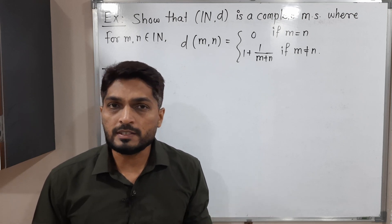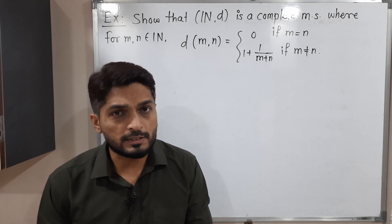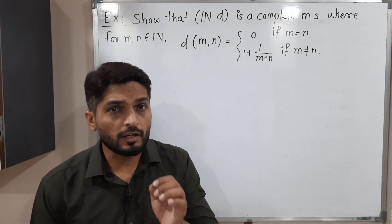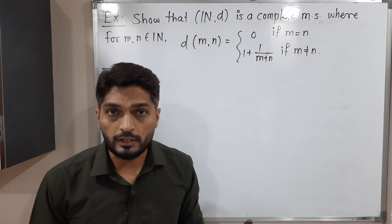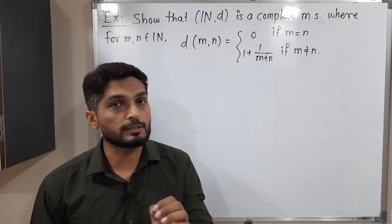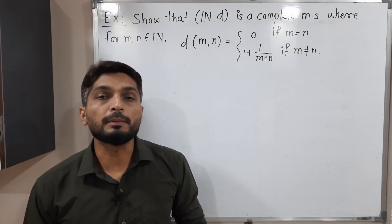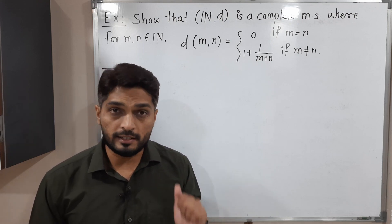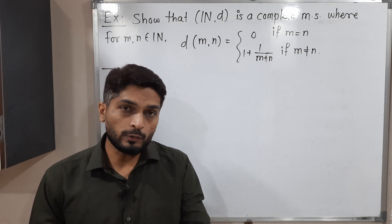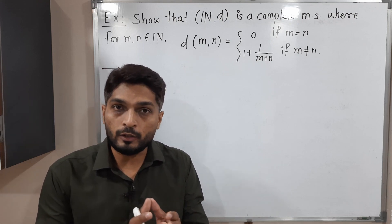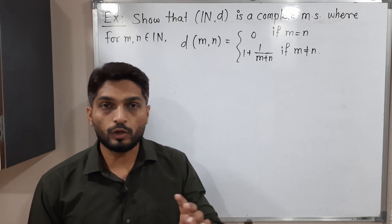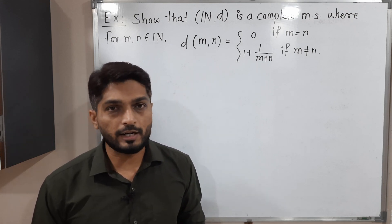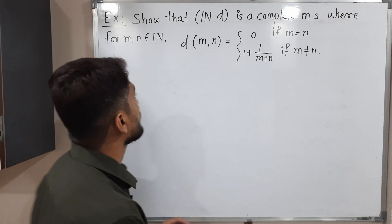When do we say a metric space is complete? If every Cauchy sequence is convergent, then we say the metric space is complete. That means here we have to take any arbitrary Cauchy sequence and prove that it is convergent. So let us start to prove.